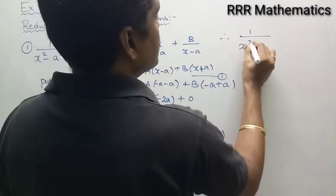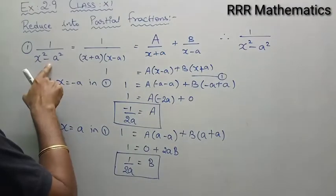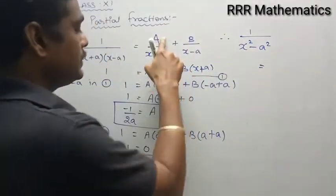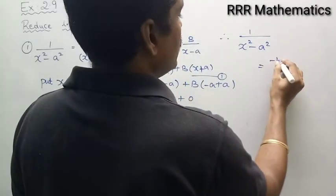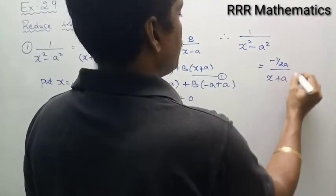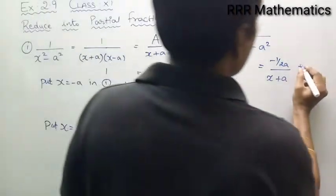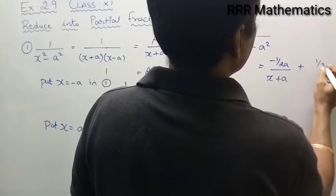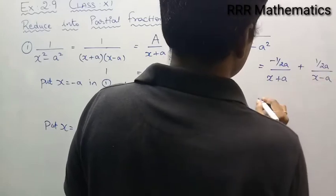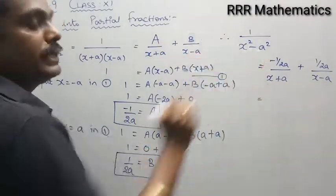Therefore, 1 divided by x squared minus a squared can be written as: capital A which is minus 1 divided by 2a, all divided by x plus a, plus capital B which is 1 divided by 2a, all divided by x minus a. I simply replace my A value and B value into the expression.